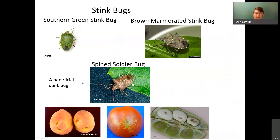The spined soldier bug's shoulder spines distinguish it from pest stink bugs. The southern green stink bug and brown marmorated stink bug are pests that puncture into plants, pods, and seeds, causing significant crop damage.